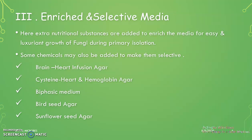The third category is enriched and selective media. Here, extra nutritional substances are added to enrich the media for easy and luxuriant growth of the fungus during primary isolation. Examples of enriched media you may already know include blood agar and chocolate agar. Similarly, an example of selective media in bacteriology is MacConkey agar.